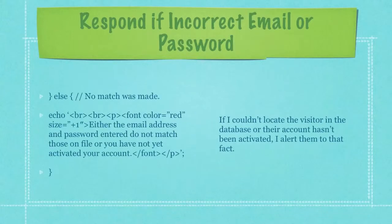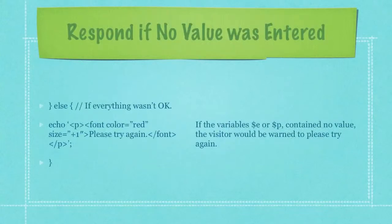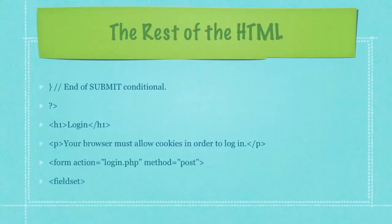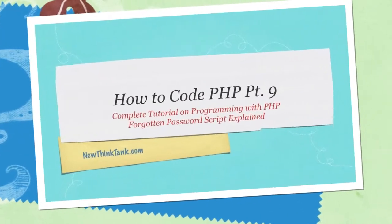If I couldn't locate the visitor in the database or their account hasn't been activated I alert them to that fact. If the variables e or p contain no value the visitor would be warned to please try again. And here is the rest of the HTML code that you would enter to finish off this script.